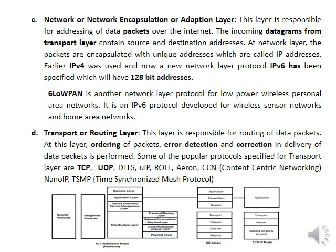The network encapsulation or adaptation layer is responsible for addressing data packets over the internet, similar to the network layer in the OSI model. Incoming datagrams from the transport layer are converted into packets. These datagrams contain source and destination addresses, and the packets are encapsulated with unique addresses called IP addresses.